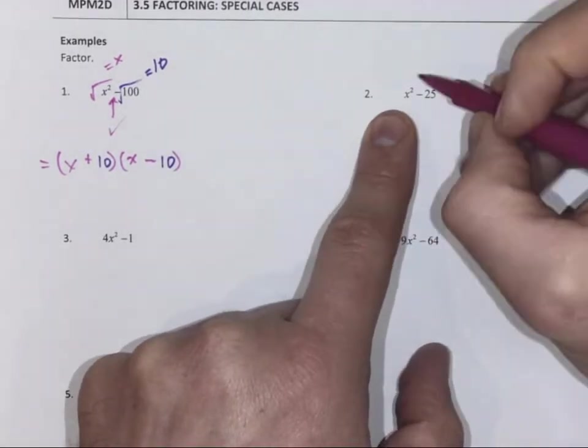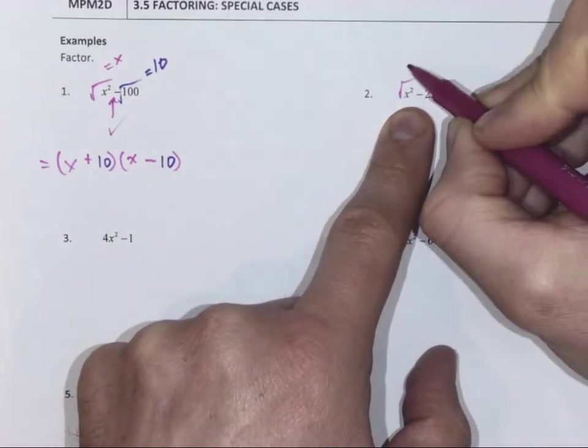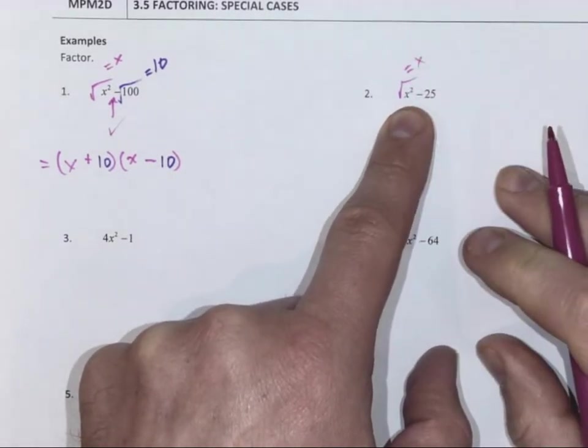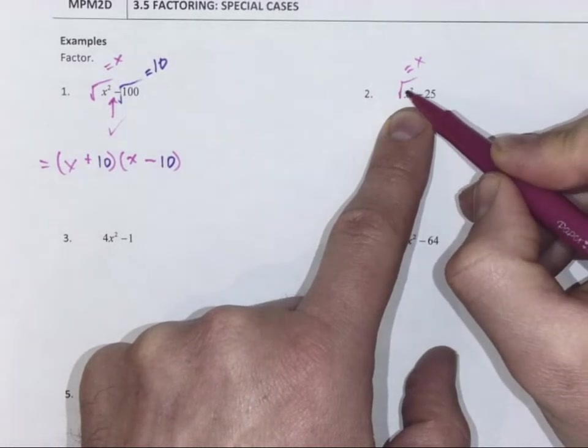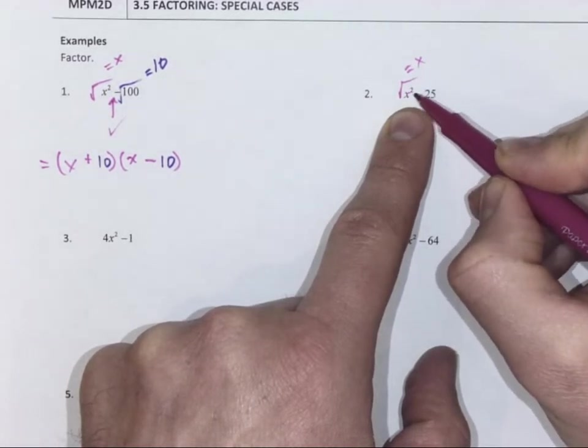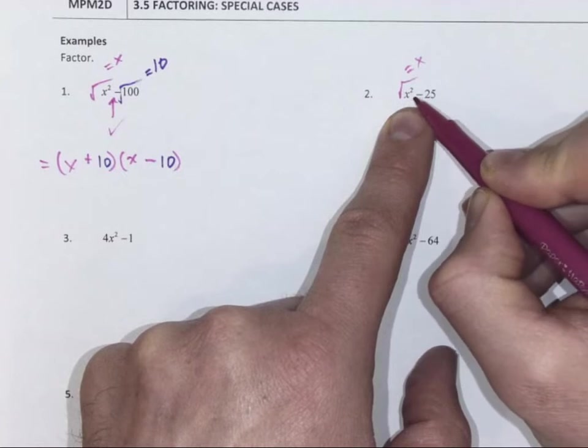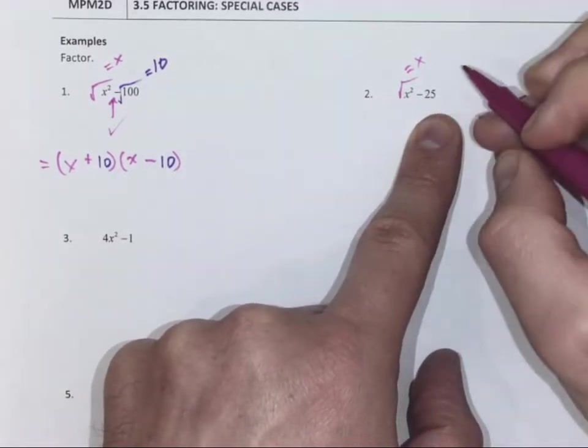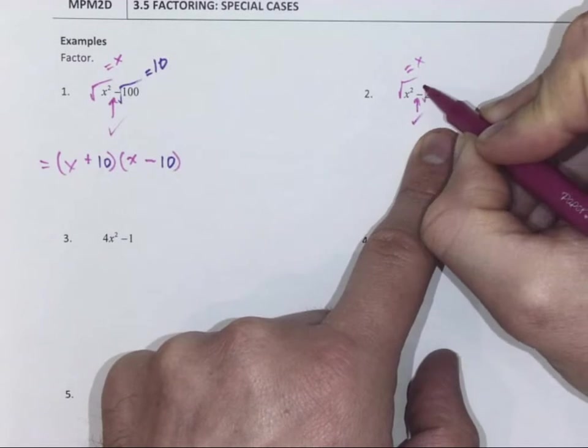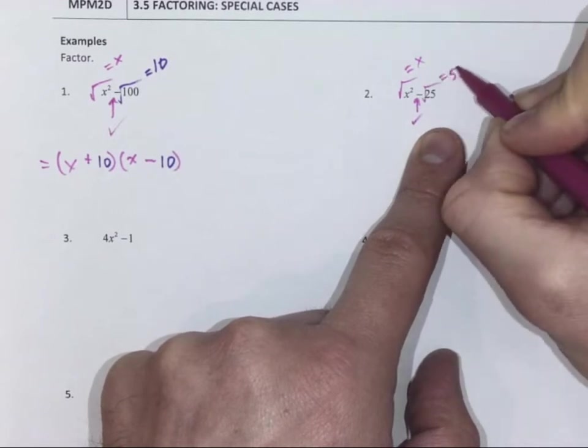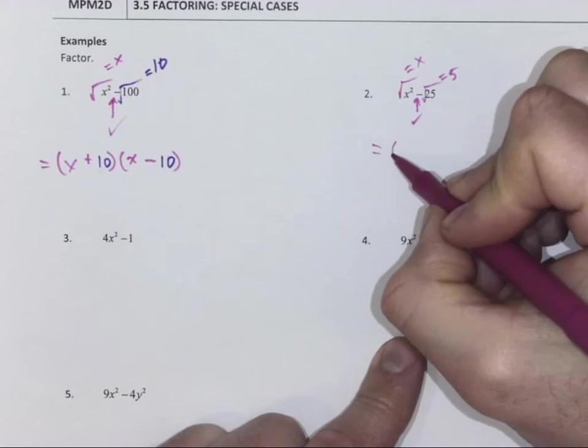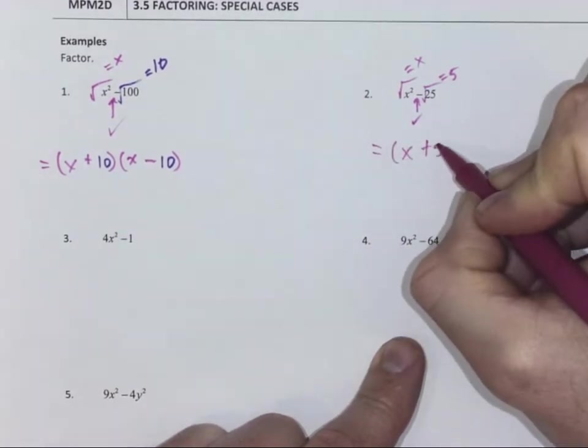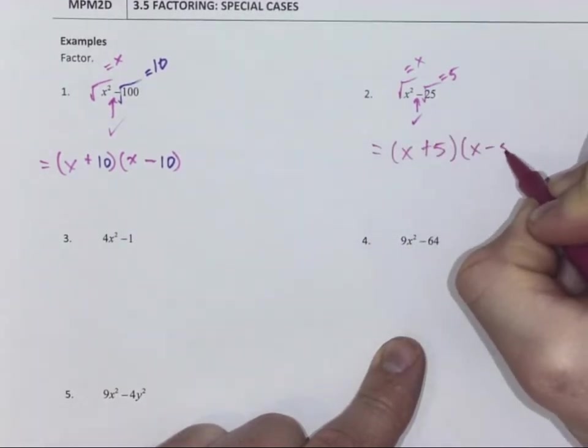So again, we look: can I take the square root of x squared? Yes, it's x. We always need an exponent to be able to take the square root, divide by 2, we need it to be even. It is even. Negative, yep. Square root of 25 is 5. So each bracket is going to have x and 5, one will be plus 5 and one will be minus 5.